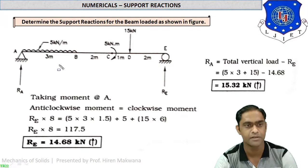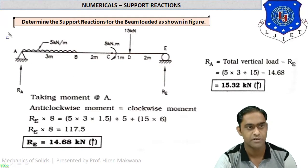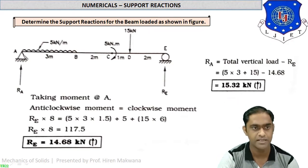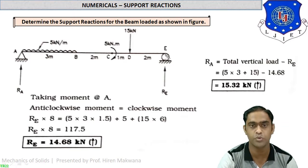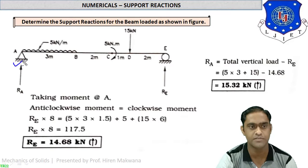Let us go to the example. First, we have to check which type of beam it is and what type of supports are present. In this figure, you can see this is a simply supported beam, because two supports are given at the ends of the beam — not in between — so this is known as a simply supported beam.